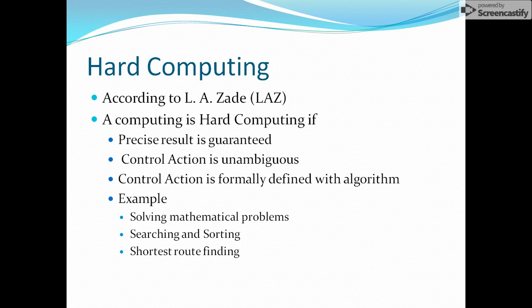The control action is basically the algorithm — the specific model which takes input, processes it, and gives output. Hard computing means a process where the inputs and output are fixed. For example, a sum function takes two integers. If later you need to add three numbers, you must create another function with three parameters. If we want a flexible function that accepts any number of parameters, hard computing won't work there. Examples of hard computing include searching, sorting, shortest path finding, and solving mathematical problems — all having well-defined algorithms.